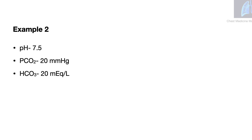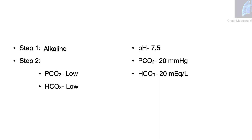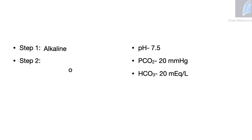Example 2: The pH is 7.5, the pCO2 is 20 mmHg, and the bicarbonate is 20 mEq per liter. Step 1: The pH is alkaline. Step 2: Both the carbon dioxide and the bicarbonate are low. Looking at the pictorial representation, the pH falls on the alkaline side, the pCO2 falls on the alkaline side, and the bicarbonate falls on the acidic side. So the alkalinity is caused by the respiratory component — this is a respiratory alkalosis.